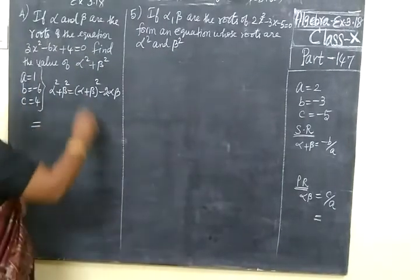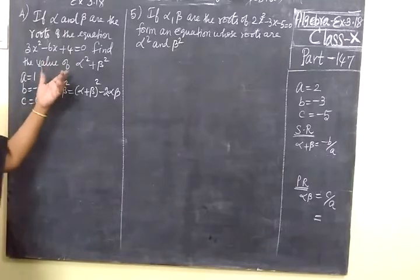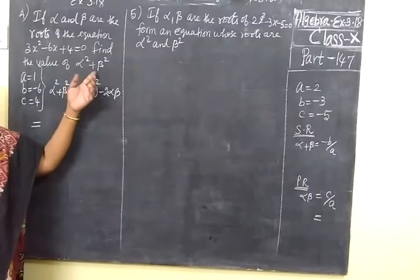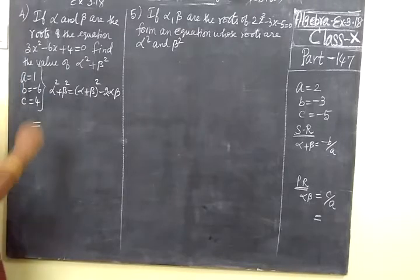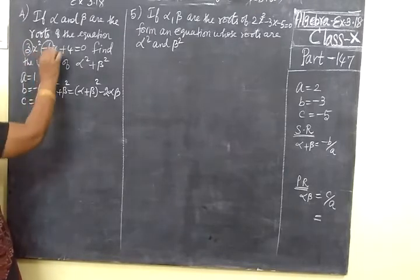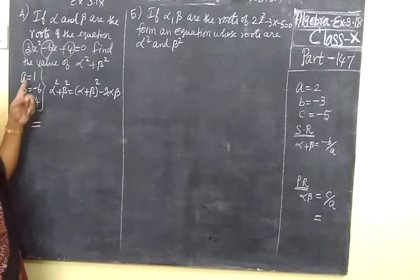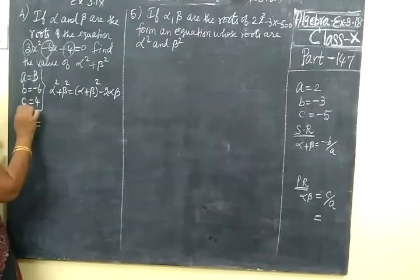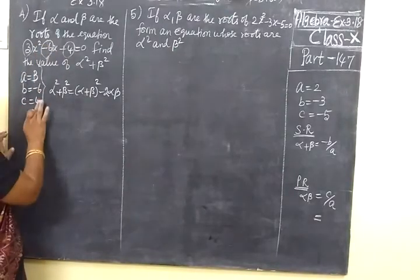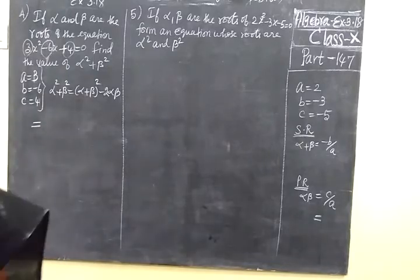Now 4th class. Alpha and beta are the roots of the equation. Find the value of alpha square plus beta square. A value, B value, C value. This is A, B, C. A is 3, B is minus 6, C is minus 4. Plus 4 or minus 4? Here it is plus 4.